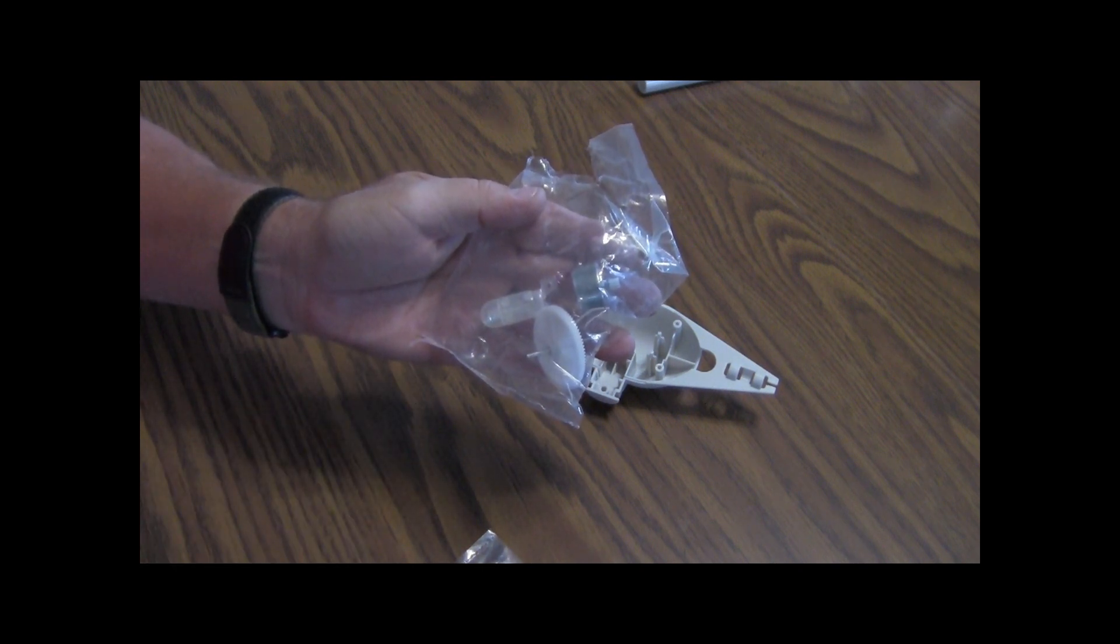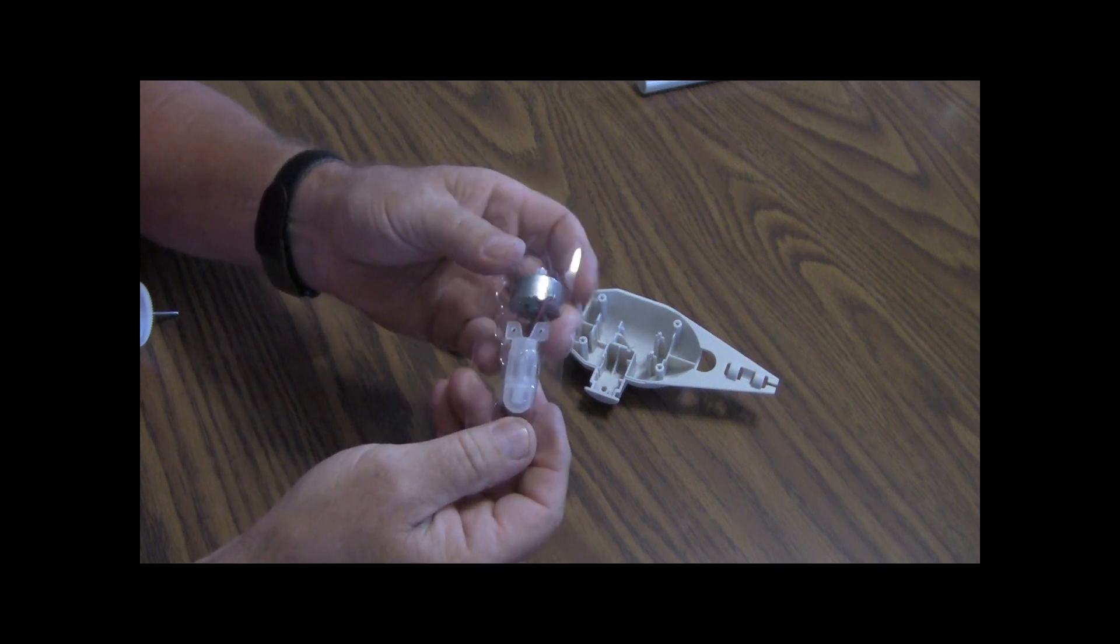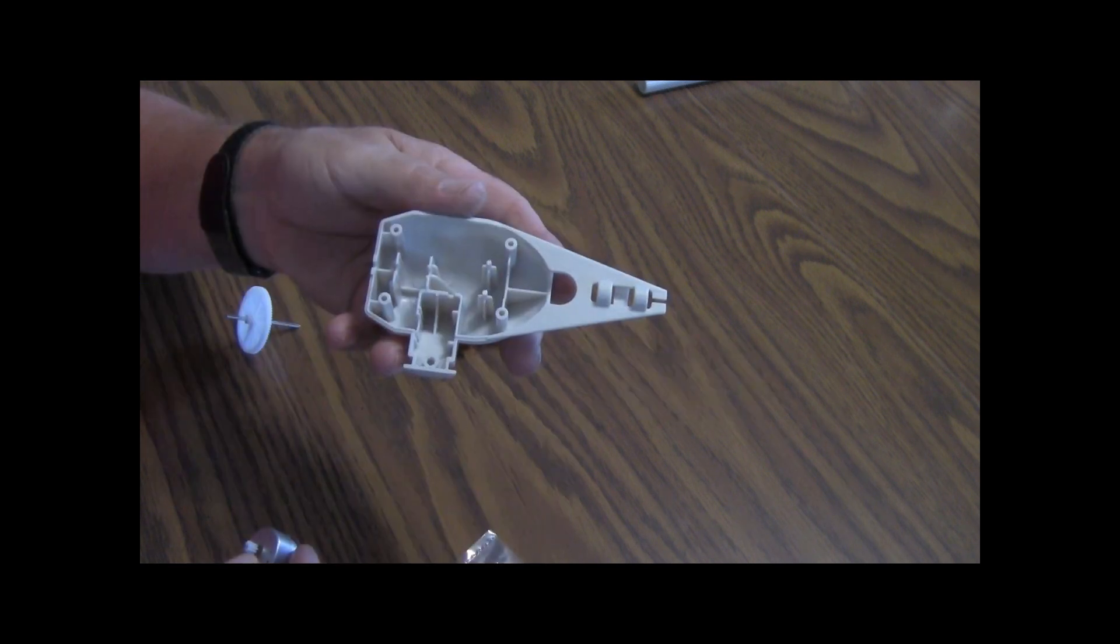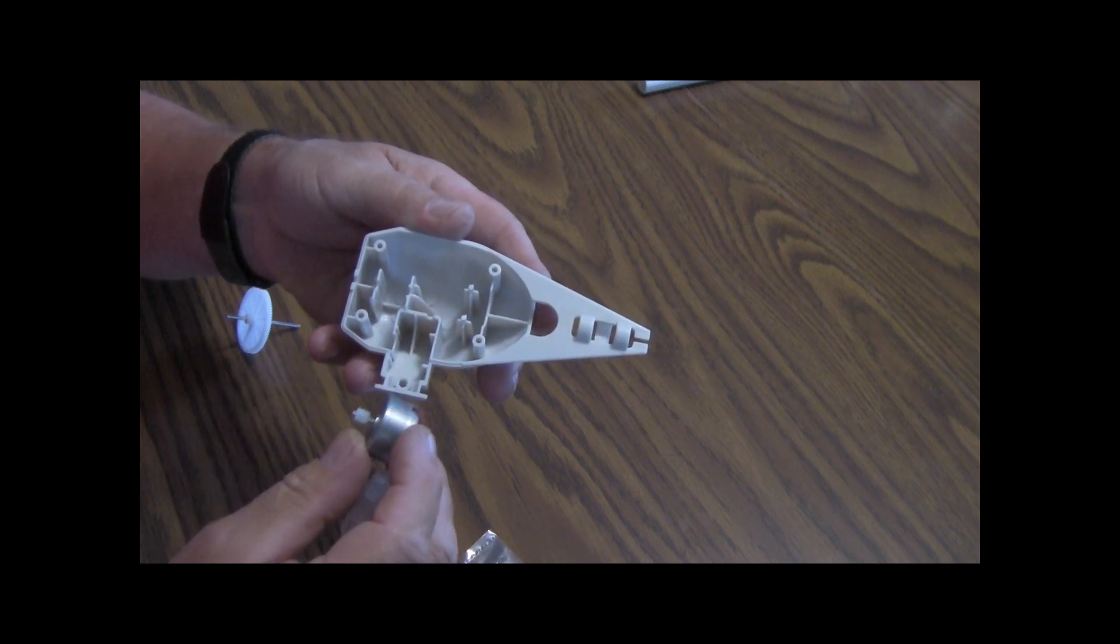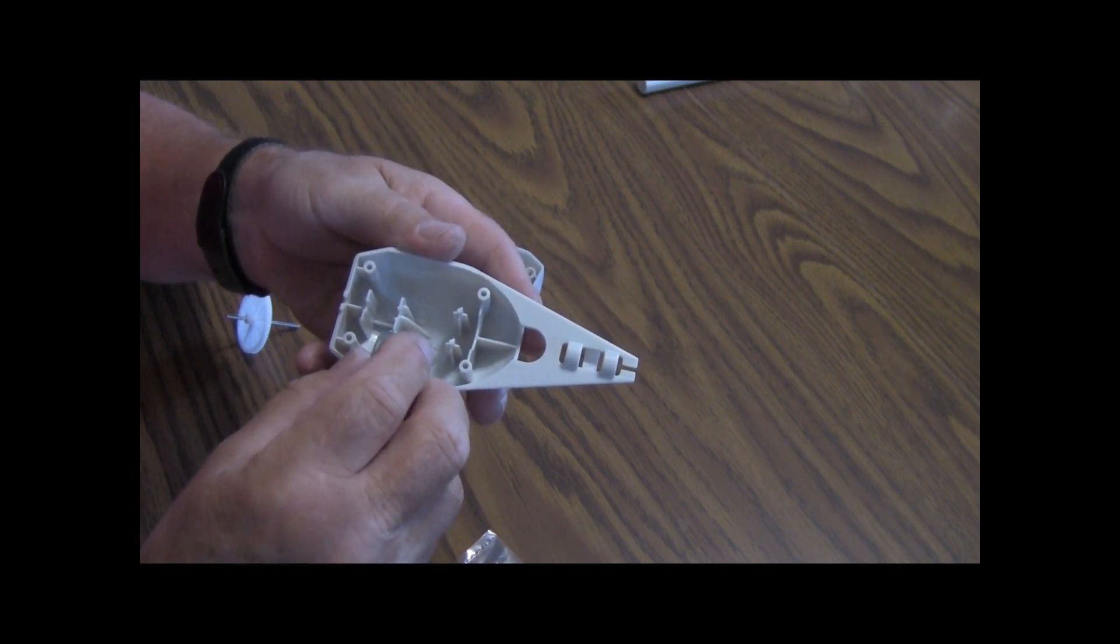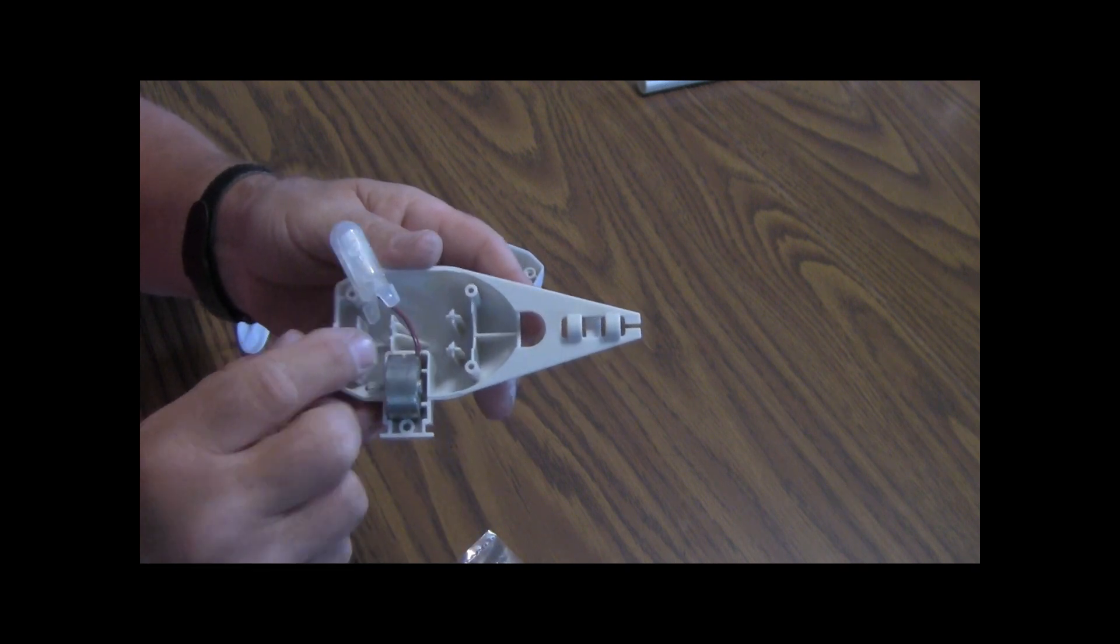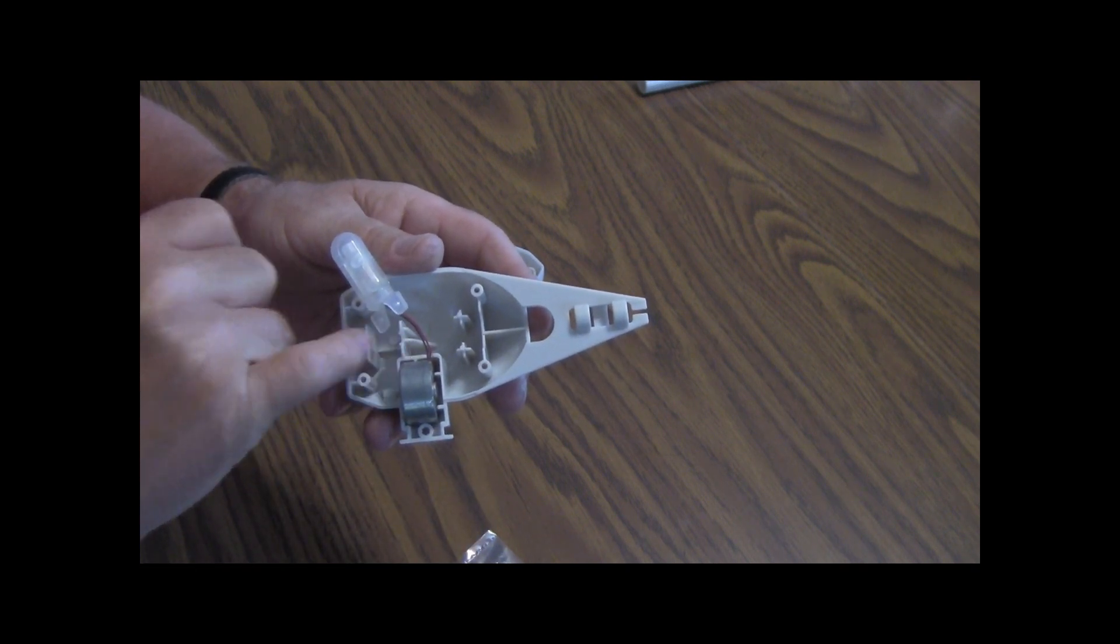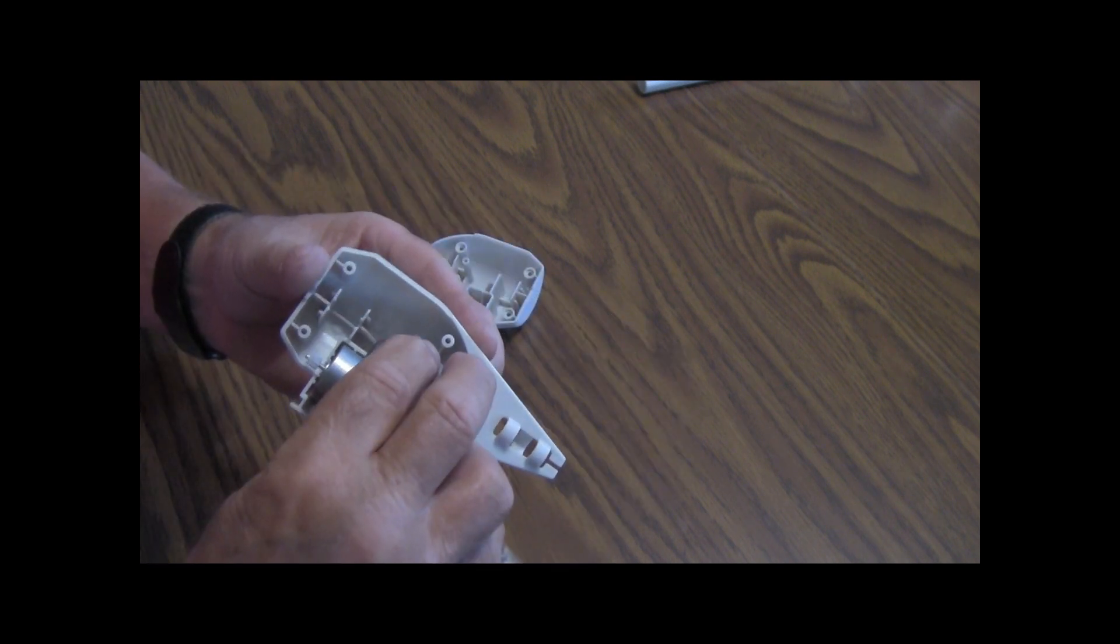Go ahead and open up your bag that's got the motor and the gear inside of it. The motor will be in a package, just go ahead and pop it out of the package. Now take the biggest part of your housing. The motor will drop right in here, and there's a little place over here for the wire to go down in.